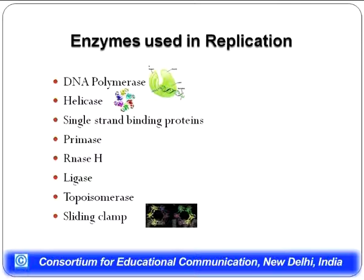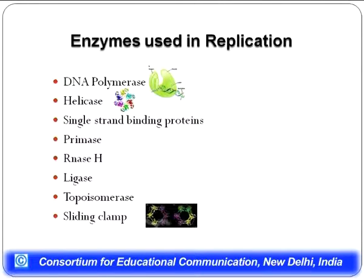The major enzyme used in replication is DNA polymerase, which has three domains: the finger domain, thumb domain, and palm domain. The finger domain and palm domain are important for catalysis, and the catalytic site is located in the palm domain. The thumb domain is required for proper orientation of the primer-template junction in the active site. In eukaryotes, the major DNA polymerases required for replication are DNA Pol alpha, DNA Pol delta, and DNA Pol epsilon, whereas in prokaryotes DNA Pol III is required for polymerization.